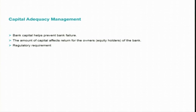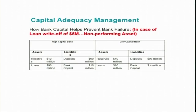One of the key things in capital adequacy is ensuring sufficient, adequate capital that helps banks prevent bank failure. The amount of capital affects returns for the owners of the bank. From a regulatory perspective, there is a clear-cut requirement for the required amount of capital — the proportion of capital to the total assets of the bank. Let us examine this by using a comparative example of two banks: one keeping high capital, called the high capital bank, and another with low capital relative to its total assets, called the low capital bank.